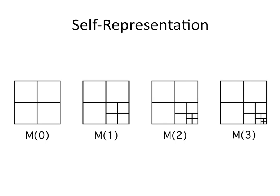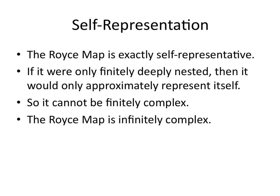Of course, this is going to be an infinitely complex structure. If the map exactly represents England, then the map is infinitely detailed, infinitely self-nested, infinitely self-mirroring, and infinitely self-representing. The Royce Map is exactly self-representative. If it were only finitely deeply nested, then it would be only approximately self-representative. So it cannot be finitely complex. The Royce Map is indeed infinitely complex.